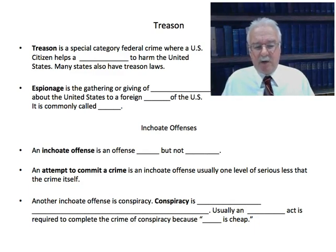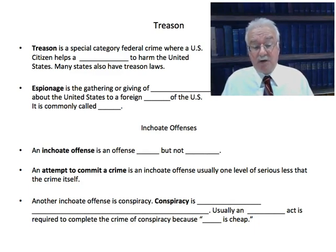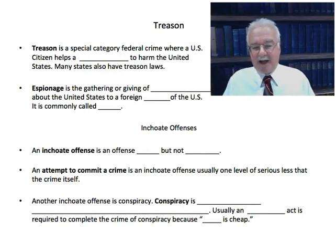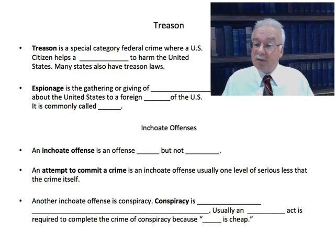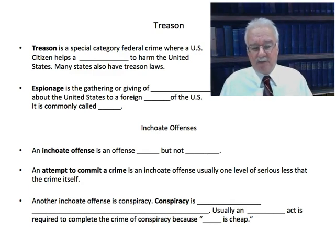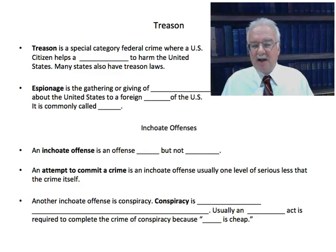Another example of an inchoate offense is conspiracy. Conspiracy is agreeing with one or more people to commit a crime. Usually, an overt act is required to complete the crime of conspiracy, because talk is cheap. So two or more people get together, decide they want to rob a bank, and sit down to plan the robbery — the time, the place, who's going to bring what equipment. That's agreeing to commit a crime, but in almost every jurisdiction you still don't have the conspiracy offense.